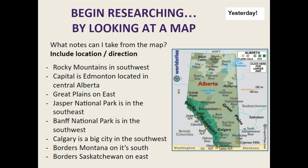Remember, first you copied and pasted your map from worldatlas.com, and then as you were writing your list of locations, each one needed to have a name of a place and the direction. For example, Rocky Mountains — located in the southwest. You highlighted five to seven of these places.